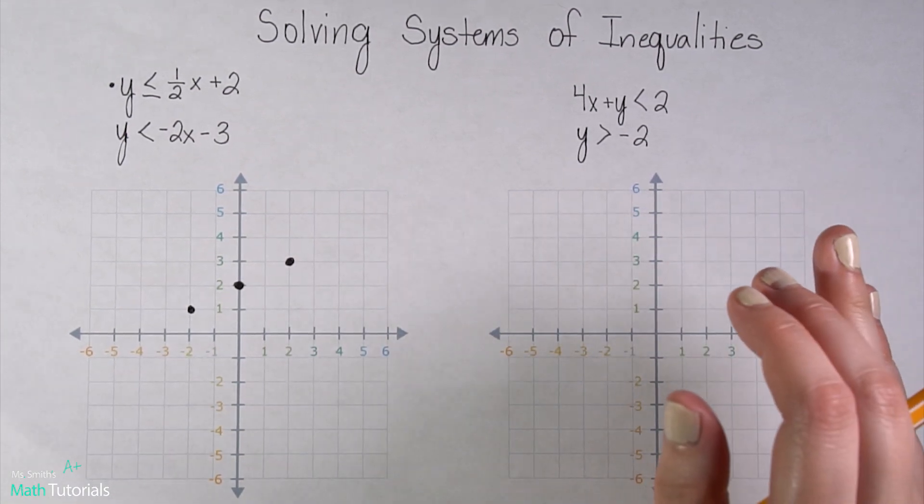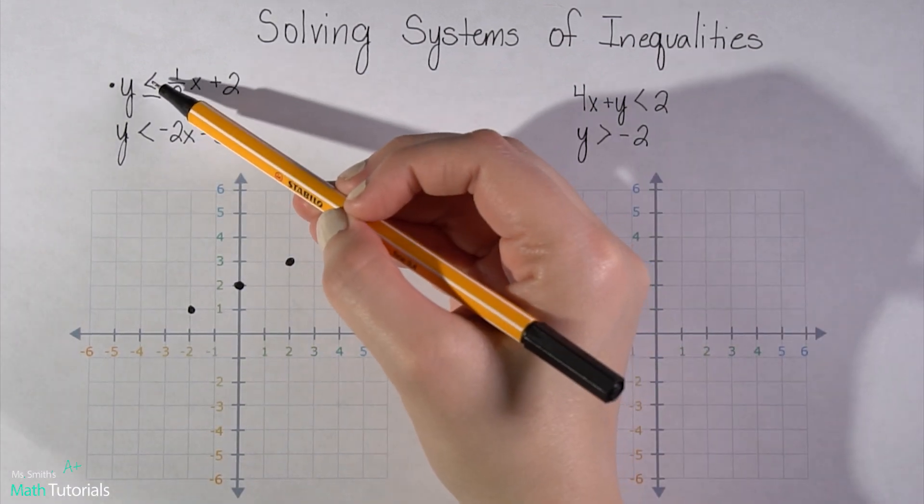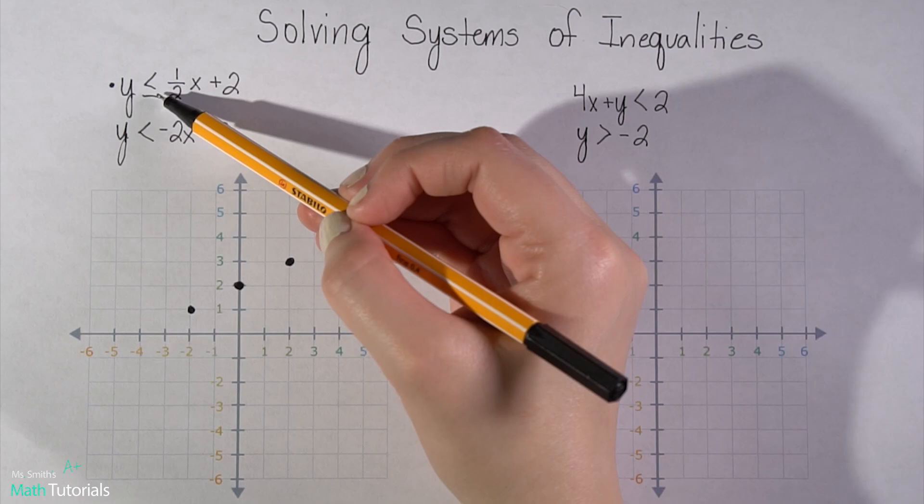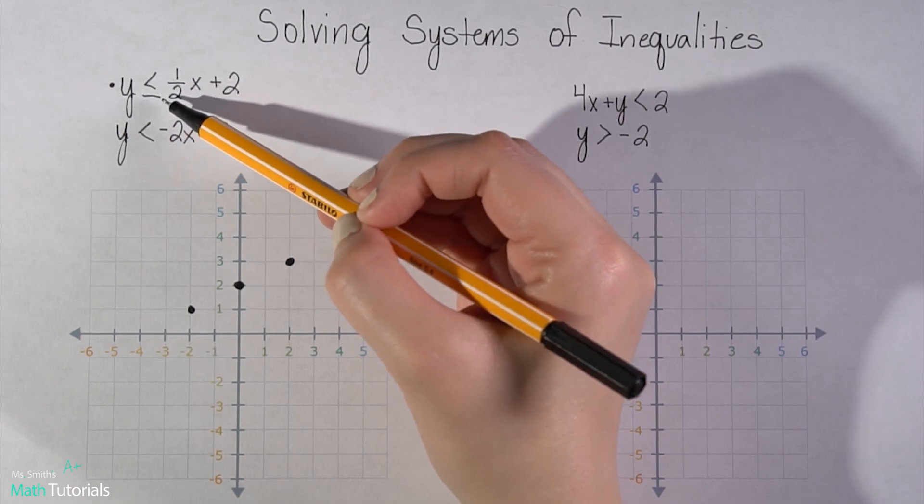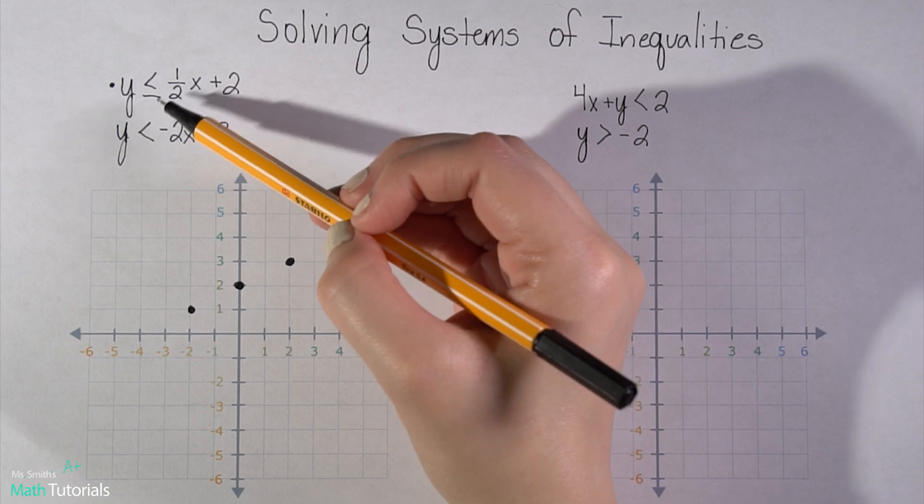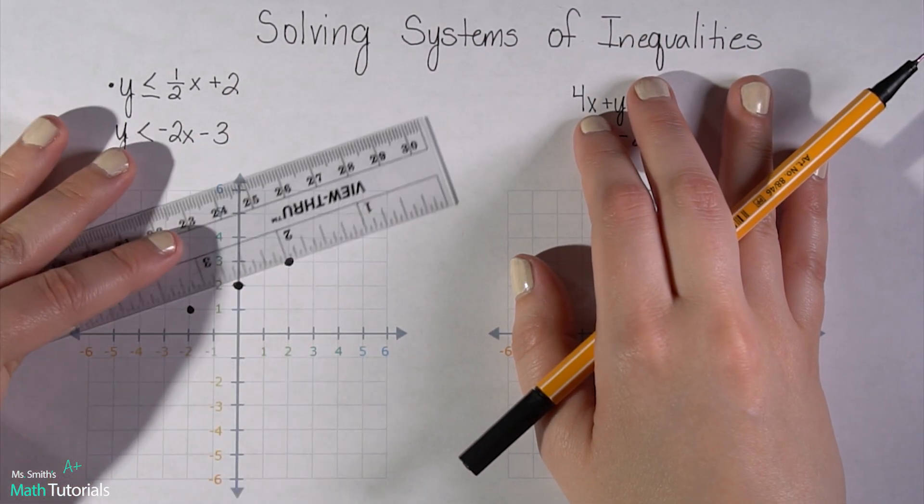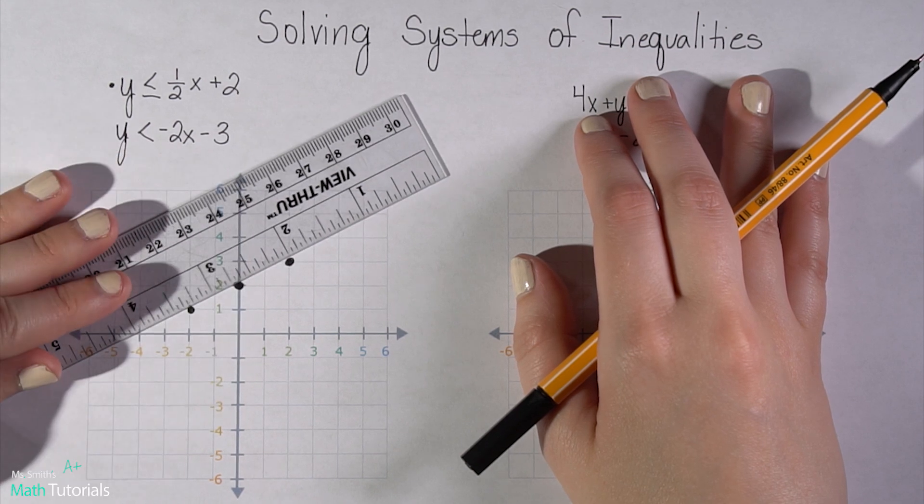Now, before I connect these dots, I need to be real careful and notice, is this just a less than or is it a less than or equal to? And in this case, it is a less than or equal to. So if you think back to that graphing inequalities video, that means I'm going to be using a solid line.